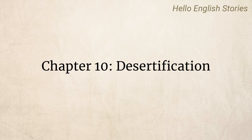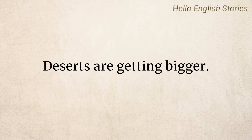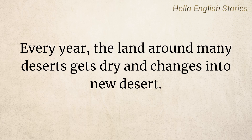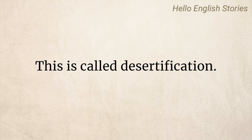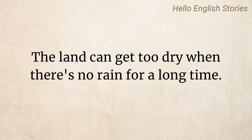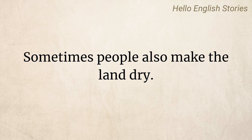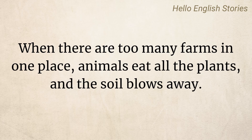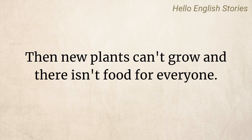Chapter 10: Desertification. Deserts are getting bigger. Every year, the land around many deserts gets dry and changes into new desert. This is called desertification. The land can get too dry when there's no rain for a long time. Sometimes people also make the land dry. When there are too many farms in one place, animals eat all the plants and the soil blows away. Then new plants can't grow and there isn't food for everyone.